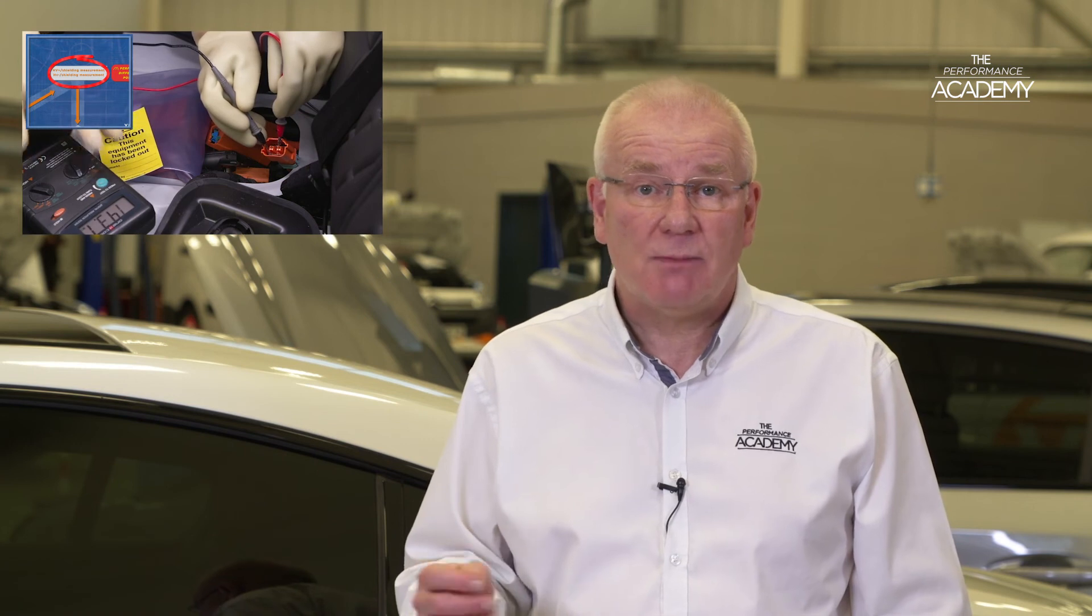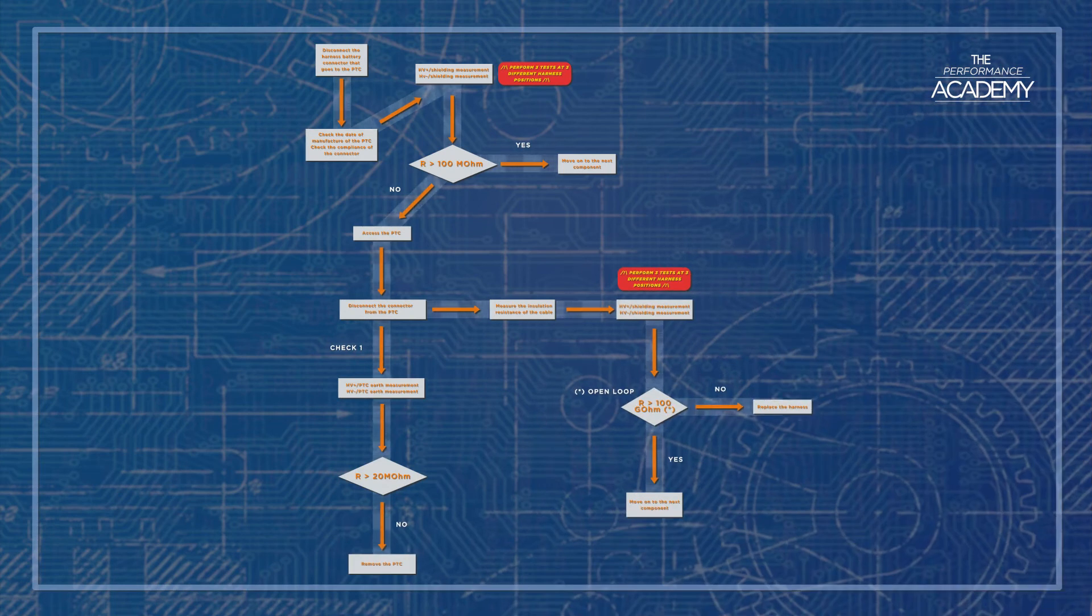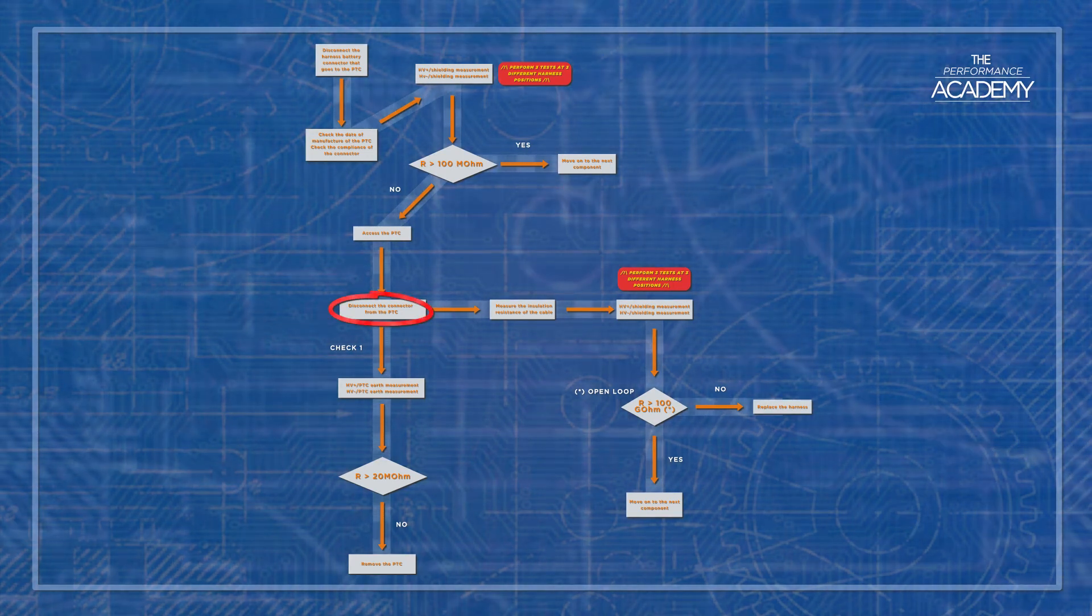However, this was a good result with a reading which scrolled up to infinity or one. But let's assume we had a reading of less than 100 mega ohms. Back to the flow chart, which instructs us to disconnect the PTC heater and test this separately.